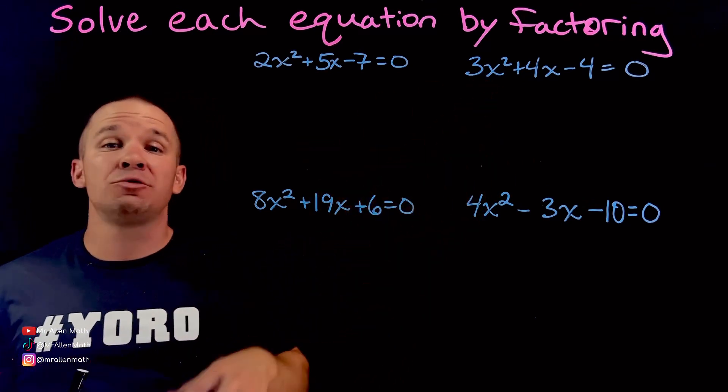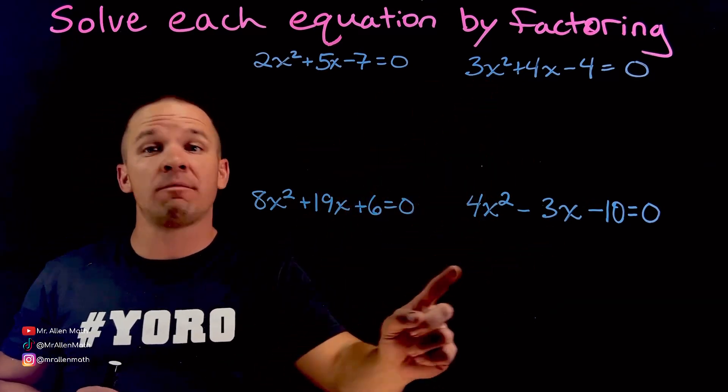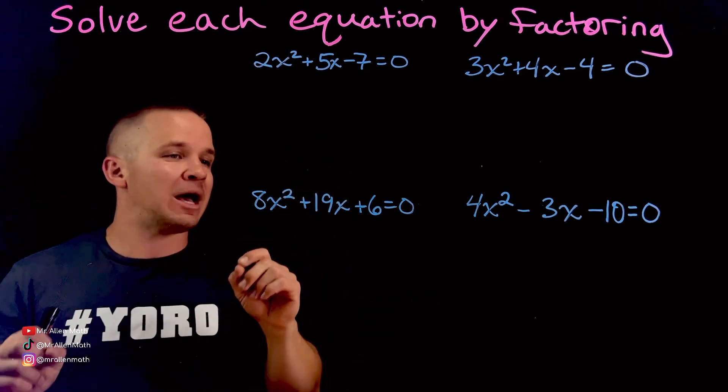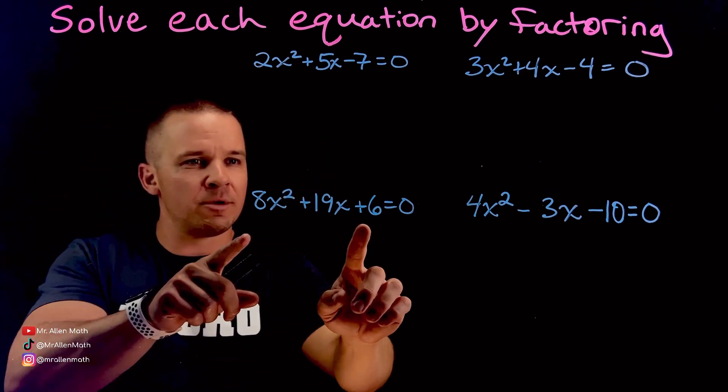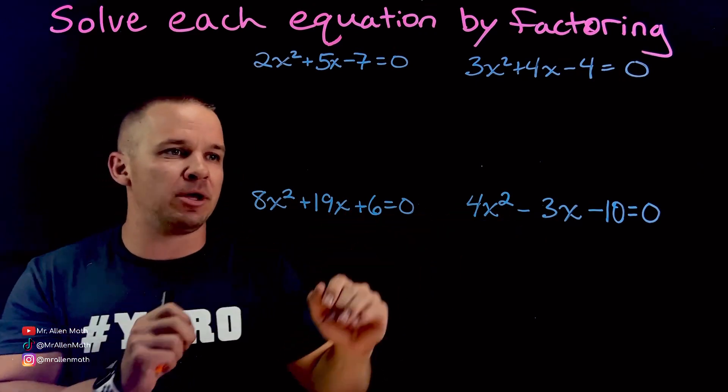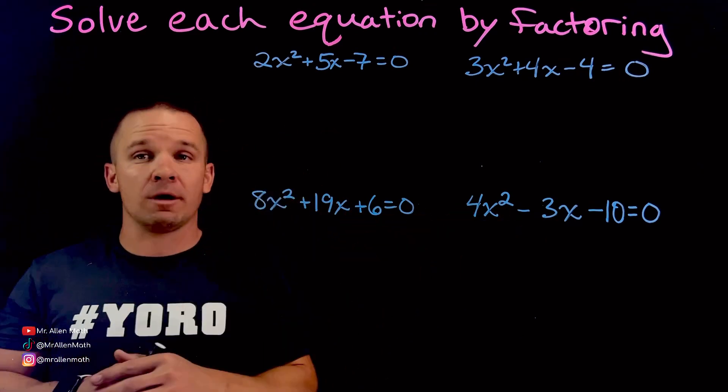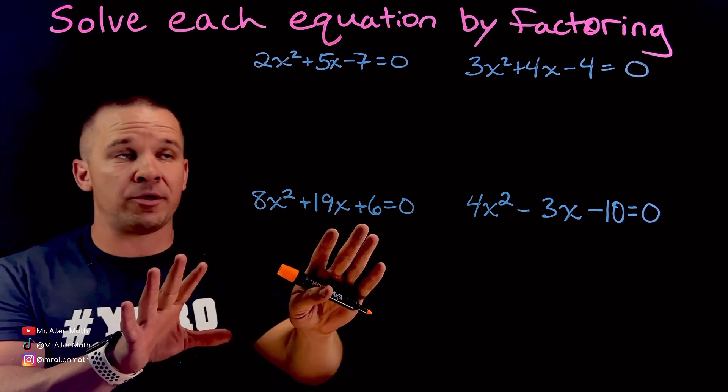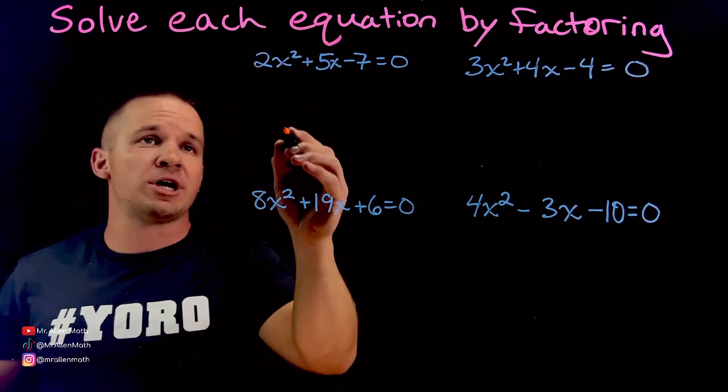First two examples, I'm going to show you how to do guess and check. The second two, I'm going to show you how to set up factor by grouping or sometimes called rainbow method, because it helps when the numbers are even. There's a lot of possibilities going on. So first one here, guess and check.